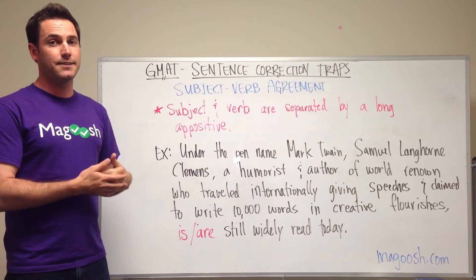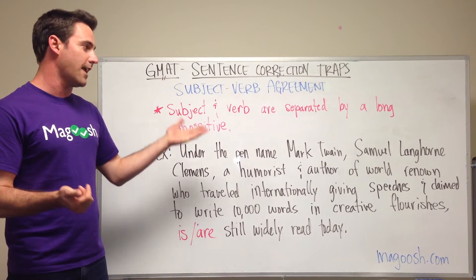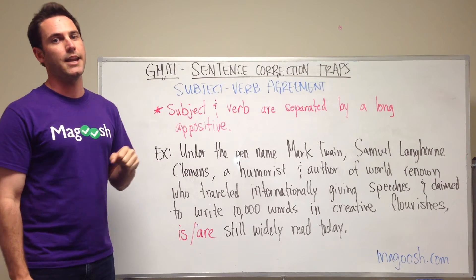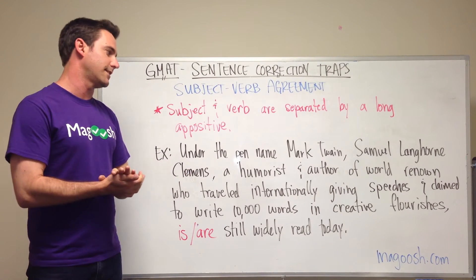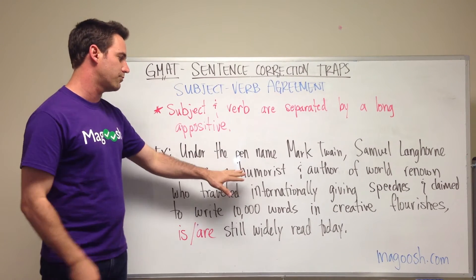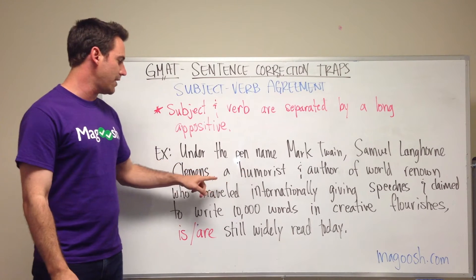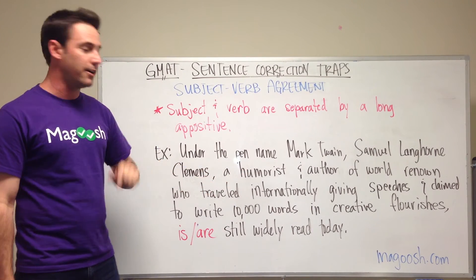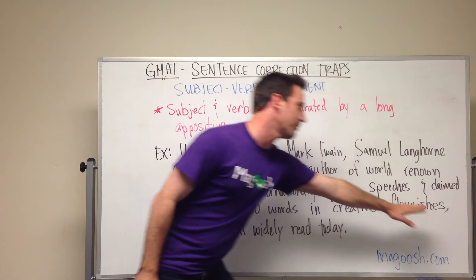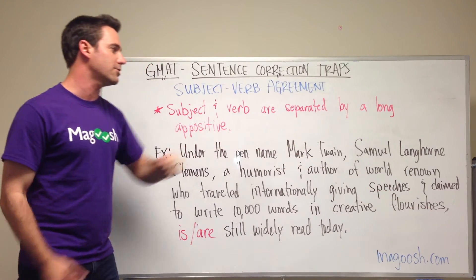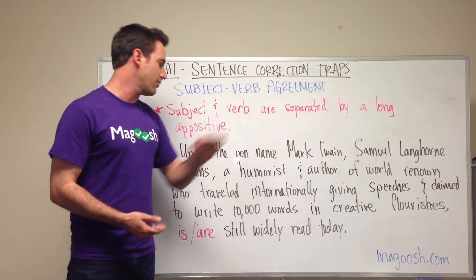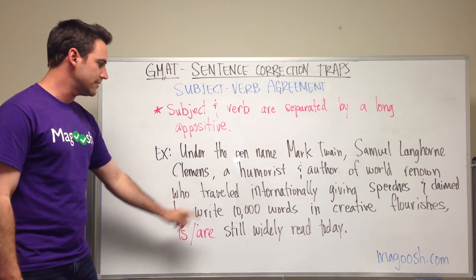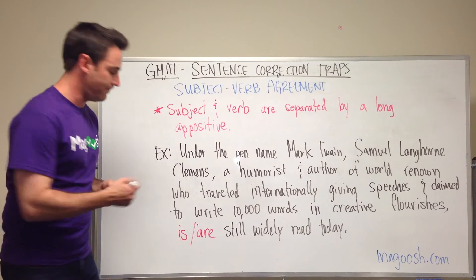The main subject of the sentence is Samuel Langhorne Clemens. It helps to read this sentence without the long phrase in the middle — the phrase starts with one comma and ends with another comma. So we can just read: Samuel Langhorne Clemens is still widely read today.